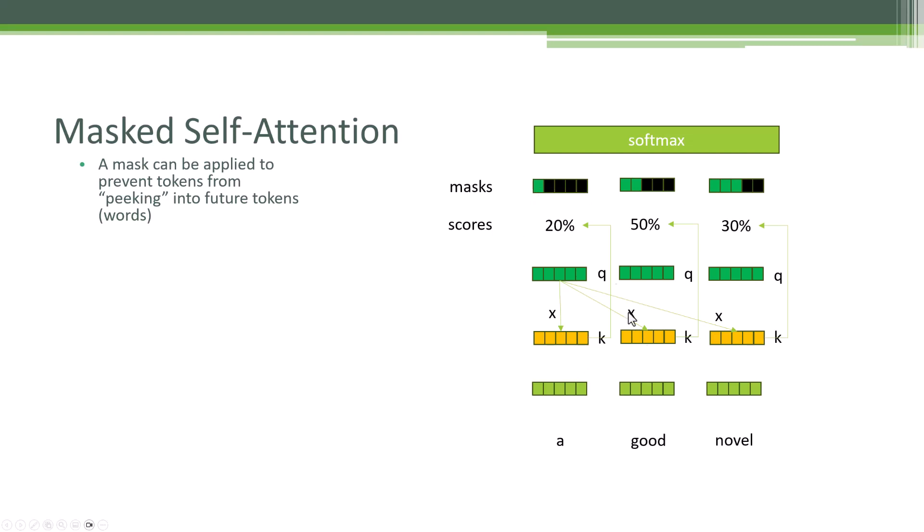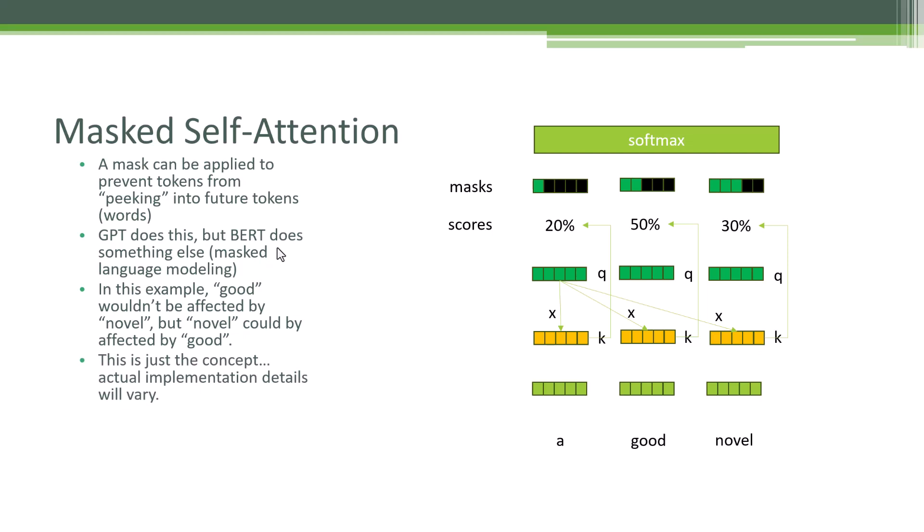So here we have a mask where green represents maybe the value one and black represents the value zero. So by multiplying each individual token by that mask, we end up masking out any information from tokens that are ahead of us. This is something that GPT in particular does. It's not something that all transformers do. BERT does something similar, but it's a little bit different. It's called masked language modeling, where they're not necessarily masking out tokens in sequence. So in this example, the word good wouldn't be affected by the word novel, but the word novel could be affected by good due to how those masks are laid out. The implementation details are a little more complicated and they do vary from model to model, but that's the idea.